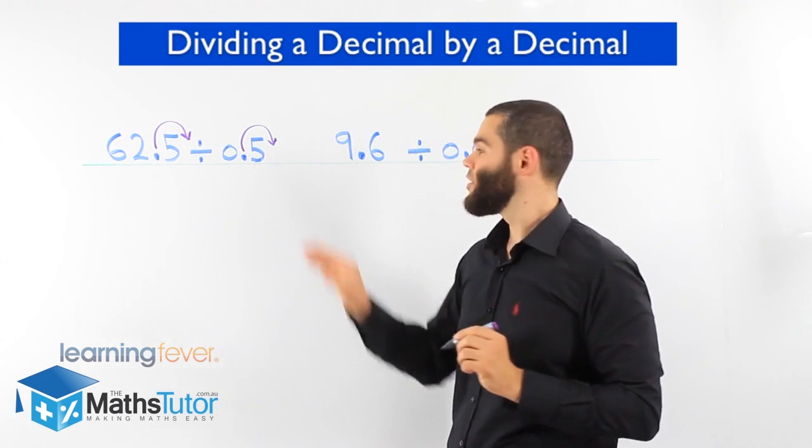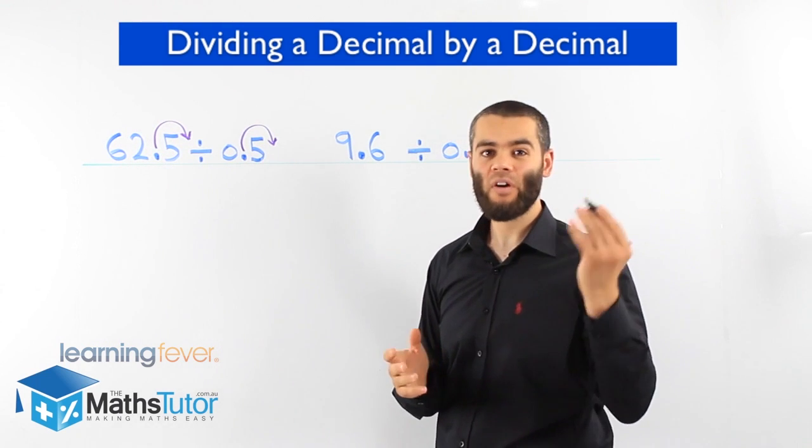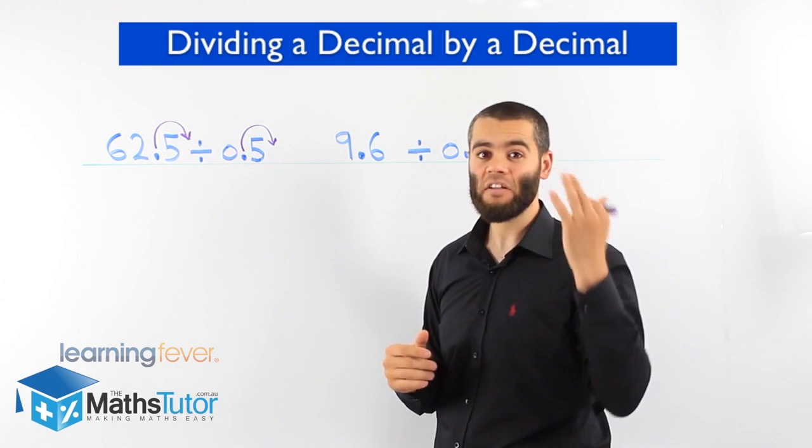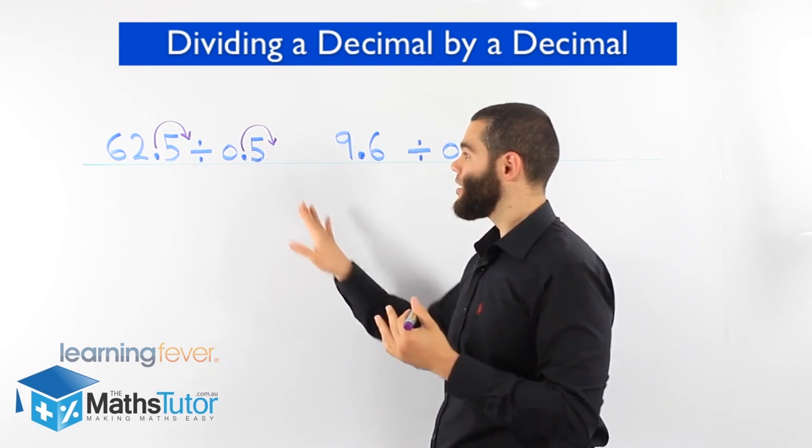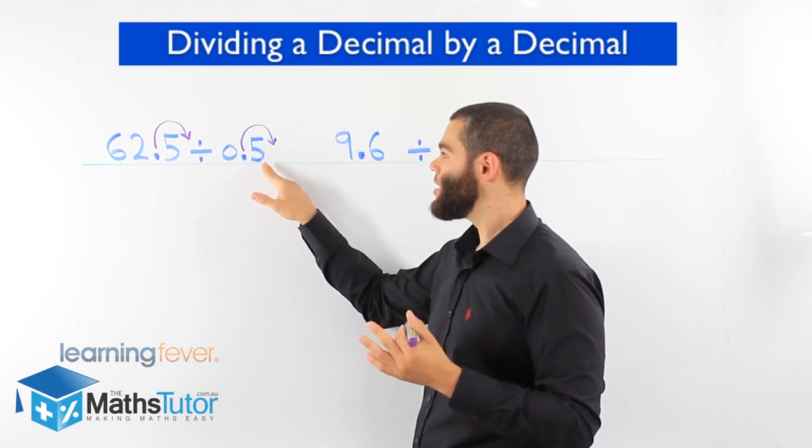So what are we doing? We are making this a whole number so we can actually start dividing. Because we can't divide a decimal by a decimal. We can divide a decimal by a whole number, but we can't divide a decimal by a decimal. So we've made it into a whole number.